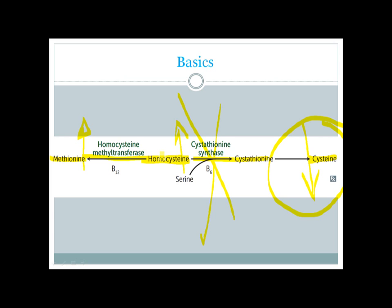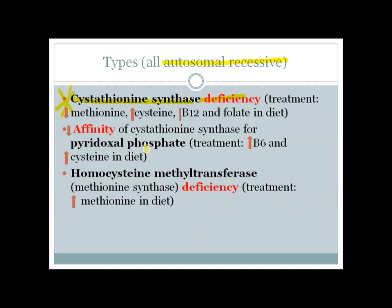To decrease elevated homocysteine levels, we can stimulate the methyltransferase reaction by supplementing with vitamin B12 and decreasing dietary methionine intake. As you can see, the treatment for cystathionine synthase deficiency involves: decreasing dietary methionine, supplementing cysteine (now essential), giving B12, and also giving folate to help convert homocysteine to methionine and reduce homocystinuria.